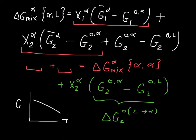We have seen what that looks like before in a plot of G versus T. One curve is for the liquid and one is for the solid, and this difference between them is exactly the delta G of melting term we just derived.